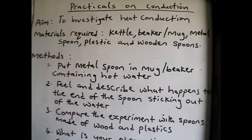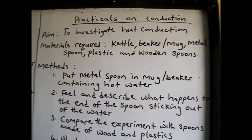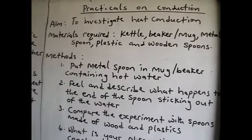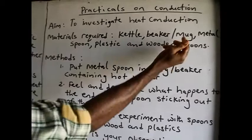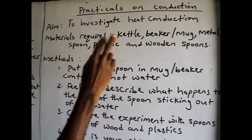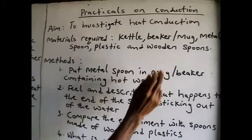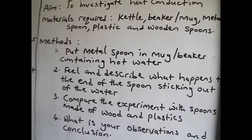Now what are the materials that are needed for this experiment? First, you need a kettle. You need a Bunsen burner if you are doing it in the laboratory. Like those of you at home, I would like you to use a gas or a stove because you may not have a Bunsen burner. So you get a kettle and a stove. You get a mug. This time, since it is not in the lab, you don't need a beaker. You need a mug. Then you need a metal spoon, a plastic spoon, and a wooden spoon.